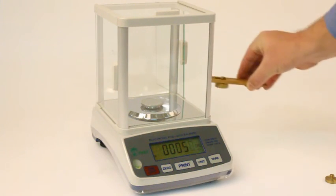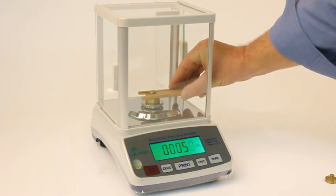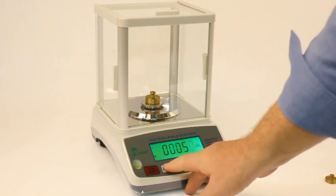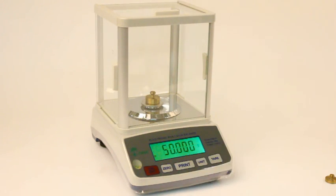Having done this, we simply put a 50 gram weight onto the weighing pan and confirm this with zero. The balance is now calibrated.